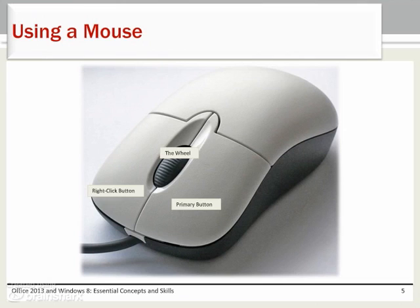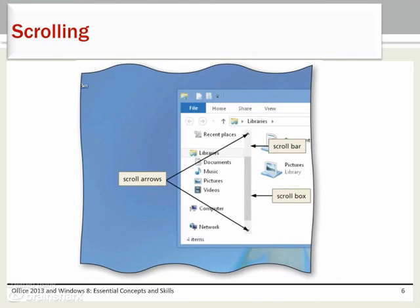The wheel helps you scroll vertically. Tilting the wheel left or right allows you to scroll horizontally. A scroll bar is a horizontal or vertical bar that appears when the contents of an area may not be completely visible on the screen. The scroll bar is located in the scroll box. Scrolling can be done using the wheel on the mouse or the arrows located at either end of the scroll box.